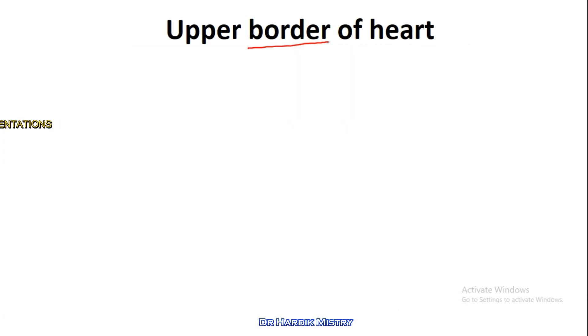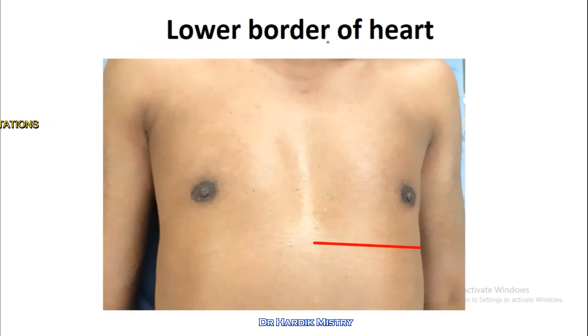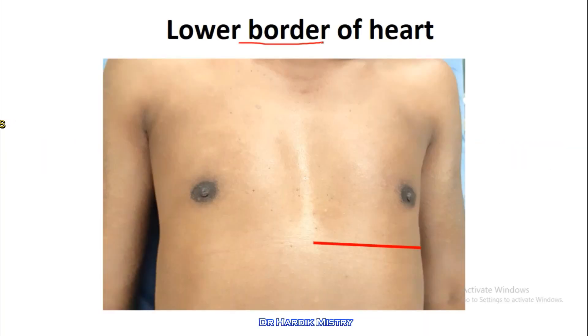The upper border is mostly present in the third or fourth intercostal space. For the lower border of the heart, we are not able to identify it as it is in contact with the diaphragm and the left lobe of the liver.